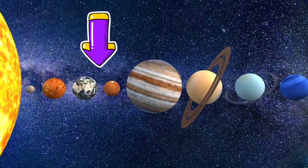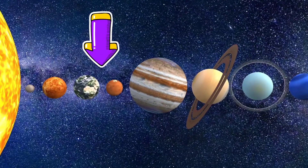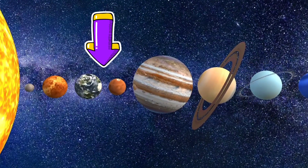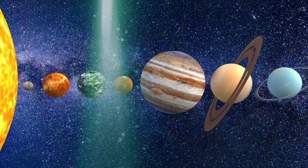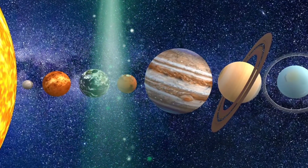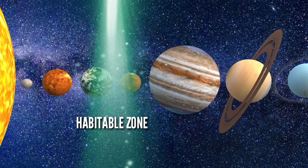At Earth and Mars, the sun is about 10 kilometers in apparent size, and in the average of some moderate zones. This is the habitable zone.